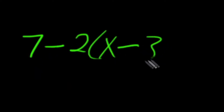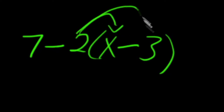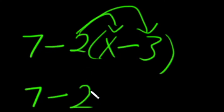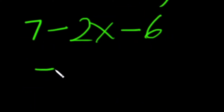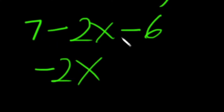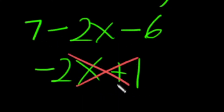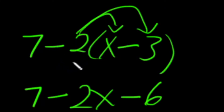Number 4. If we have 7 minus 2 times (x minus 3), you're probably thinking to distribute the 2 into the parentheses. So it may look like 7 minus 2x minus 6. Combine like terms — that would be negative 2x, and 7 minus 6 would be positive 1, giving plus 1. But that's not right, because we're subtracting the coefficient, so we need to distribute the negative along with the 2 into the parentheses.